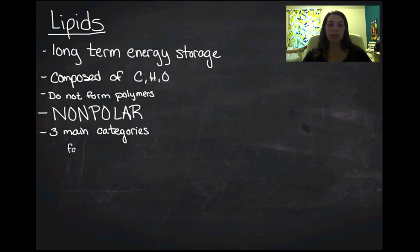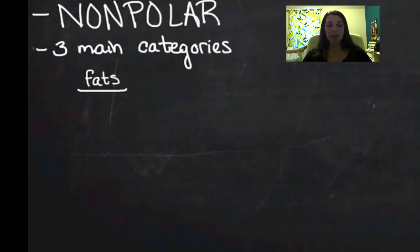So there's three main categories of lipids. We have fats and fats are composed of a glycerol and three fatty acids. And those fatty acids can be saturated or unsaturated.